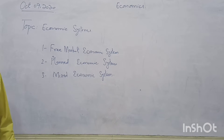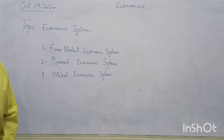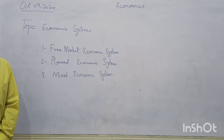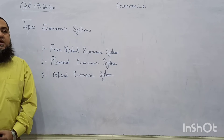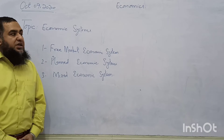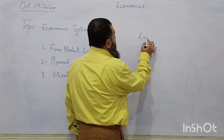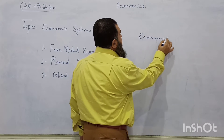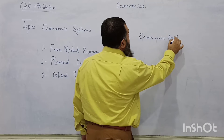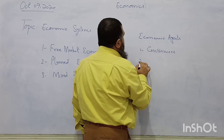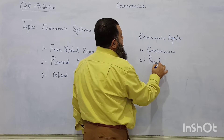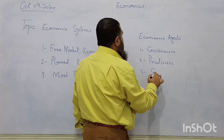In any system, we find that parts are integrated and work with each other, then they can perform their tasks. The same is the case with an economic system — we have economic agents. Those economic agents are: first, consumers; second, producers; and third, the government.